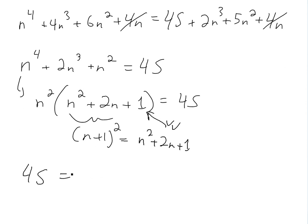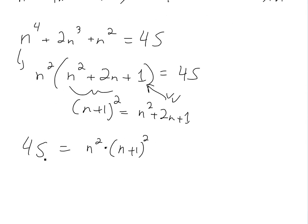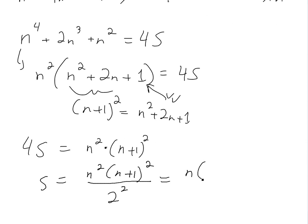So thus 4S is equal to n squared times (n plus 1) squared. And now we just divide out by 4. S is going to be n squared times (n plus 1) squared divided by 4 — writing the 4 as 2 squared and taking the square out — so this is going to be n(n plus 1) divided by 2, all squared.